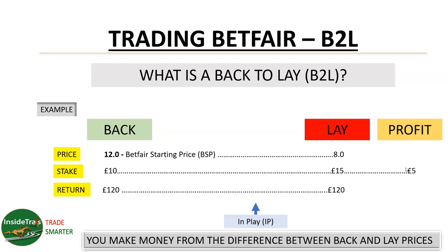My lay bet has to match so the return gives me an equal liability as my back bet. At odds of 8, I can lay £15 to match the amount I would get back for my £12 at 10, and I will get a profit no matter what the outcome of £5. I have a back to lay staking calculator where you can input the odds you're going to back at, the amount, and the profit you want to make.